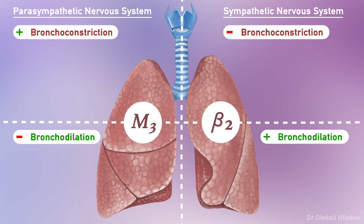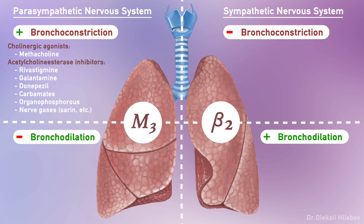Cholinergic agonists like methacholine, and acetylcholinesterase inhibitors or indirect cholinergic agonists like rivastigmine, galantamine, donepezil, carbamates, organophosphoric compounds and insecticides, and nerve agents like sarin, soman, tabun, V-agents, and cyclosarin — directly or indirectly stimulate M3 cholinergic receptors and cause bronchoconstriction. Also, as M3 receptors are present in bronchial glands, stimulation of them increases bronchial secretion.